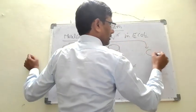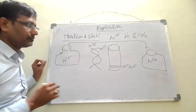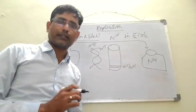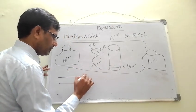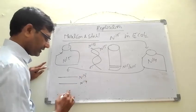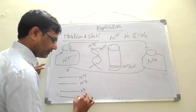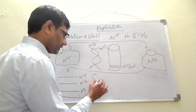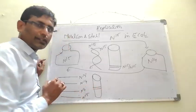These bacterial cells are then shifted and cultured into N14 isotope-containing culture medium. They extracted DNA after 20 minutes from this culture medium. The DNA is 100% hybrid DNA — that means one strand has N15 isotope and another strand has N14 isotope. This DNA is separated by density gradient centrifugation, and the bands are formed in the middle portion of the test tube.